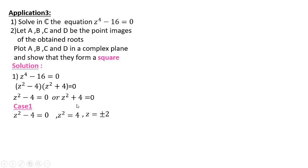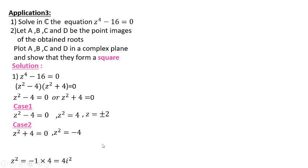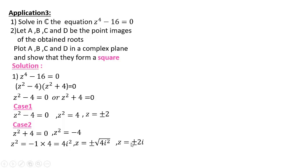For z² + 4 = 0: z² = −4. To get rid of the minus sign, rewrite −4 as 4i². Consequently, z = ±√(4i²) = ±2i. Finally, this equation has four roots. The solution set includes real roots −2 and 2, and pure imaginary roots −2i and 2i.